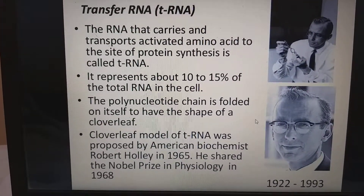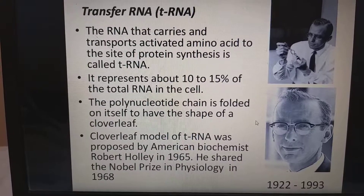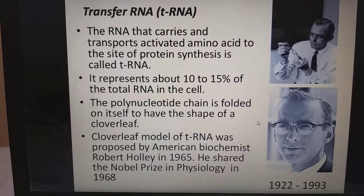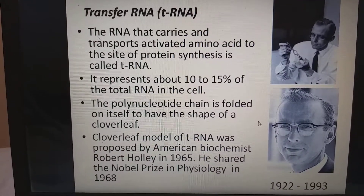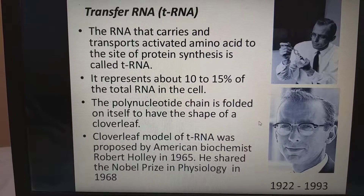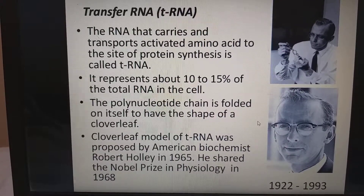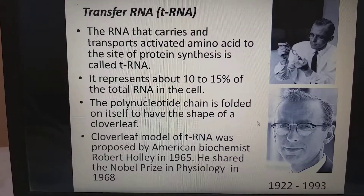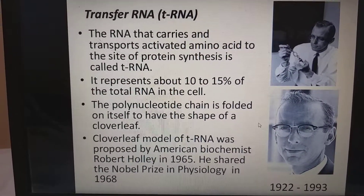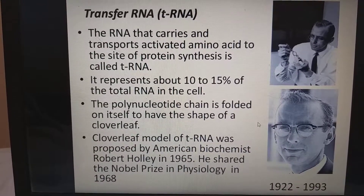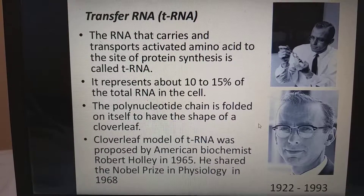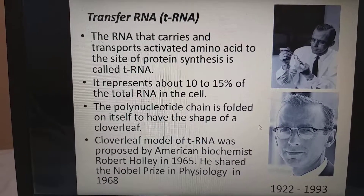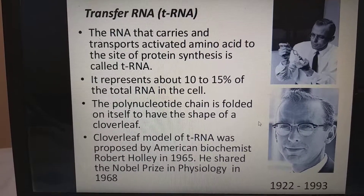Transfer RNA or tRNA is the RNA that carries and transports activated amino acids to the site of protein synthesis. It represents about 10 to 15% of total RNA in the cell. The polynucleotide chain is folded on itself to have a shape of a cloverleaf. The cloverleaf model of tRNA was proposed by American biochemist Robert Holley in 1965, and he shared the Nobel Prize in physiology in 1968.